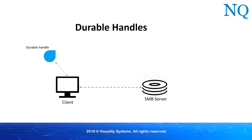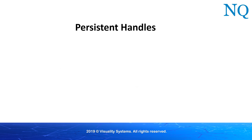But what happens if it isn't the connection between the client and the server that has gone down? What if the entire server went down? In this case, SMB offers something called persistent handles, and these are available only in SMB3 dialects.